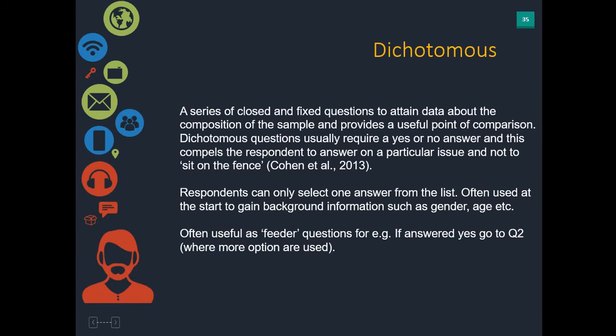The first one, and most common, is a dichotomous question. Dichotomous questions are very closed and often very fixed. They're used to attain data about the composition of the sample. Typically, this is the start of your survey where you're asking respondents their gender, their age, their income level, their education level, because that provides a useful characteristic of your sample. You're often going to need that data — your independent variables — for your statistical tests later on when you come to your analysis.